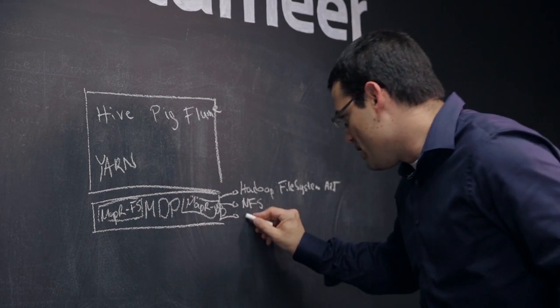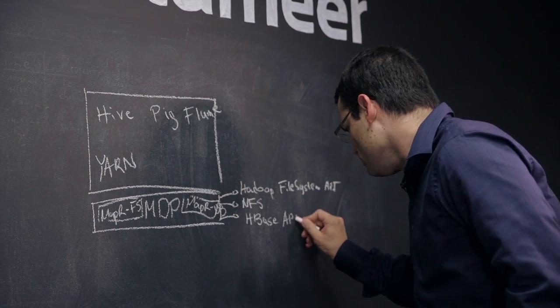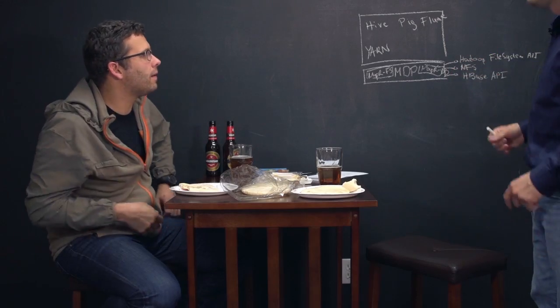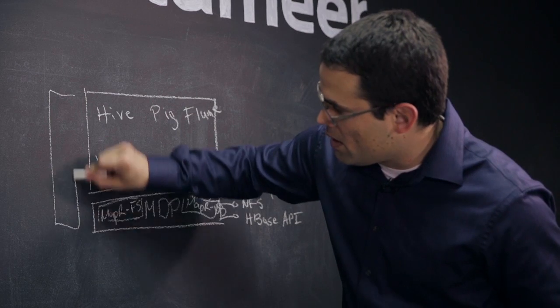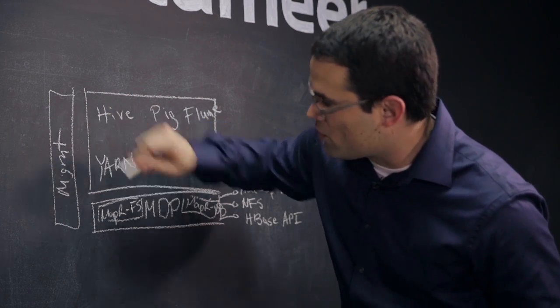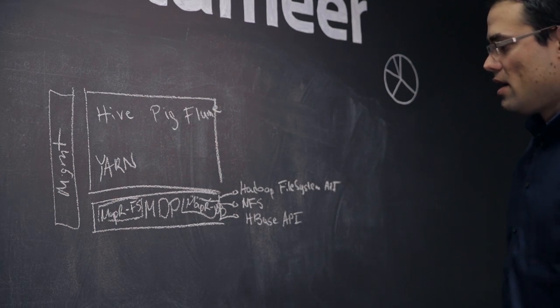And then there's the HBase API, because that's the standard interface in Hadoop for tables. So we expose that and that's the way you basically read write to the tables. So that's kind of the overall, we add our management innovation as well. So this is management, we call this the MapR control system.